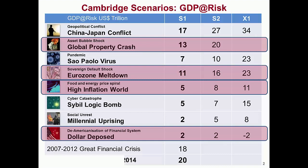As mentioned previously, global property crash has the propensity for the greatest damage, followed by the Eurozone meltdown. High inflation world and dollar deposed are a little bit more muted. It's not surprising that dollar deposed causes smaller damage, because a global currency shift isn't an indicator of economic damage per se — what you're really looking at there is transition costs more than long-term damage.